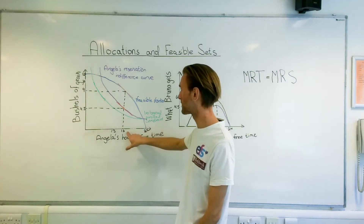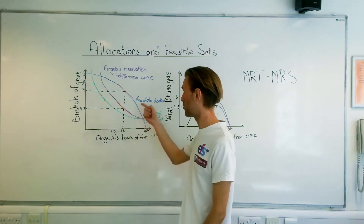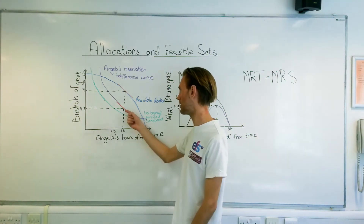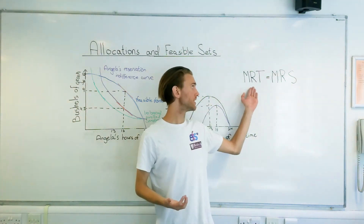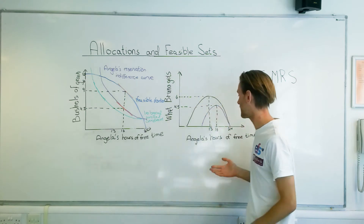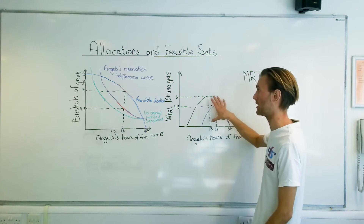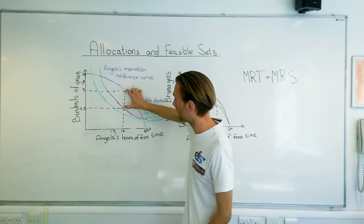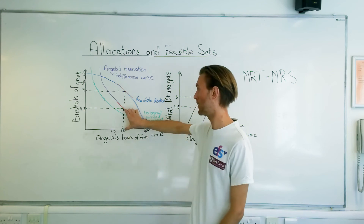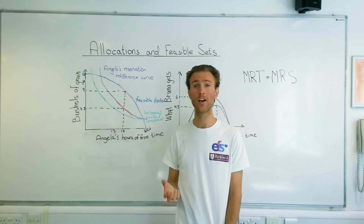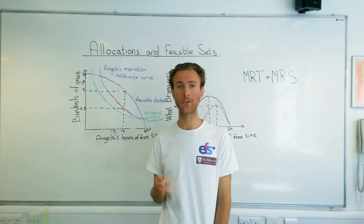Now the most optimal point for Angela to work is 8 hours a day, which is where the slope of the feasible frontier, the MRT, equals the slope of the reservation indifference curve — where MRT equals MRS. We can see that now Bruno gets only four and a half bushels, whereas when he could force her to work, he could get six bushels. This is what Bruno gets, and this is what Angela gets. Angela gets four and a half compared to four bushels, but she also has three hours more of free time. If you have any questions, please leave them in the comment section below. Bye-bye.